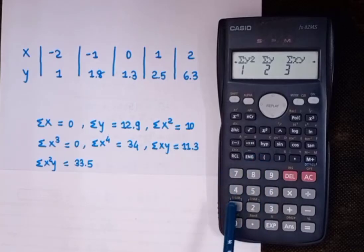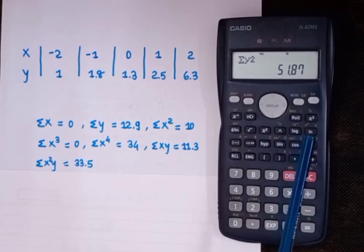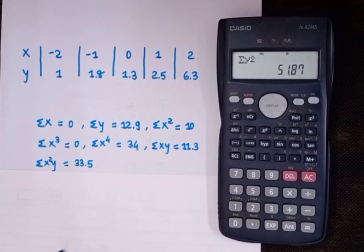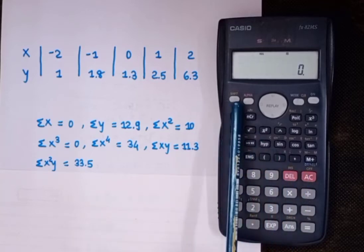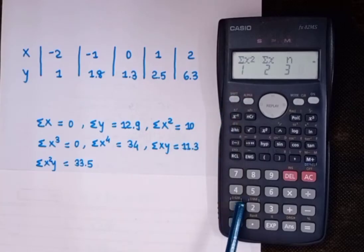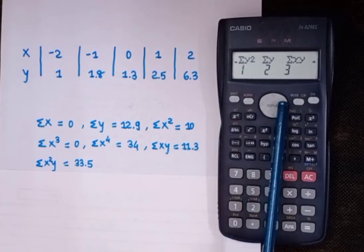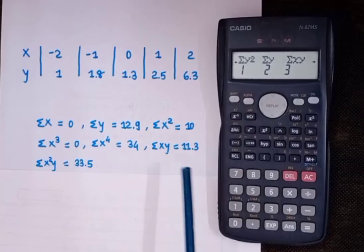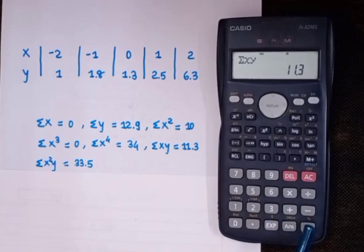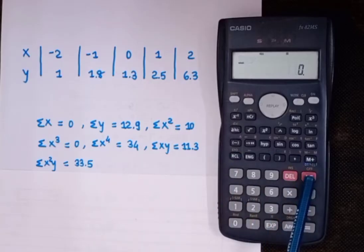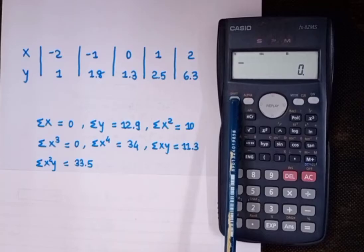Then press Shift 1, next, and find Sigma Y²: press 1 then equals — we're getting 51.87. But as you can see, we don't need Sigma Y². Then Shift S-sum, press next, and find Sigma XY: press 3 then equals — we're getting 11.3.